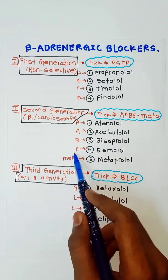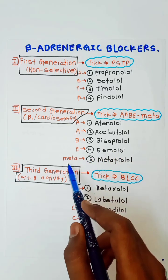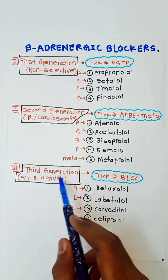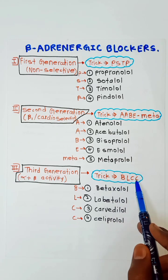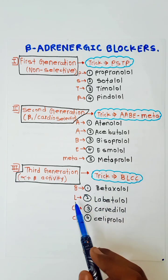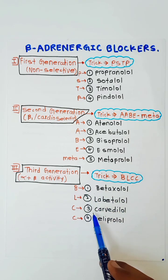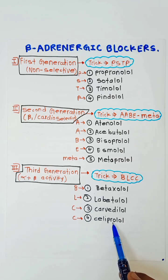In third generation drugs, the trick to remember is BLCC: B for betaxolol, L for labetalol, C for carvedilol, and C for celiprolol. Thank you for watching.